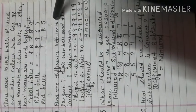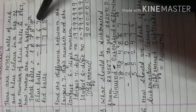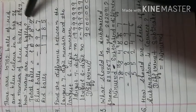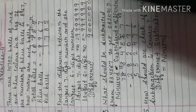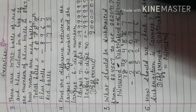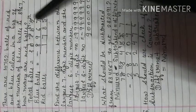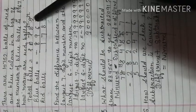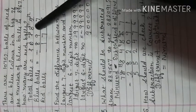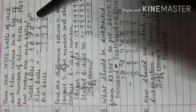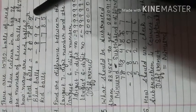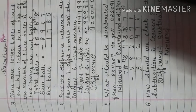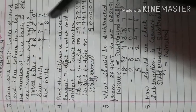Always subtract the smaller number from the greater one only. If it is not possible — for example here we have 2 and 7, we cannot subtract 7 from 2 — we have to regroup by borrowing from the neighbor. This 2 borrows from 5, so 5 becomes 4 and 2 becomes 12. After subtracting 7 from 12 we get 5.